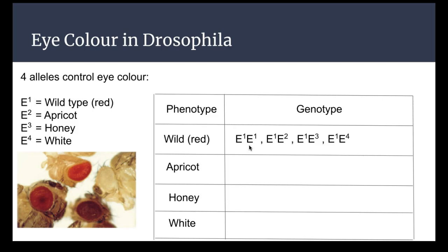Moving down to apricot: apricot is the second most dominant color, so it can't have any E1s, but it can have E2 or below. So the options are E2/E2, E2/E3, or E2/E4. Two of those three options are carriers of honey or white. As long as they have one E2, they're apricot — but no E1s, because E1 would overpower E2.